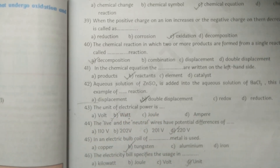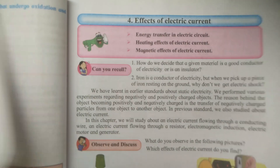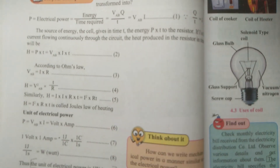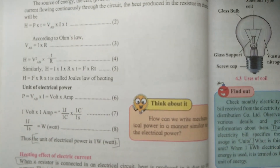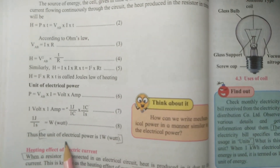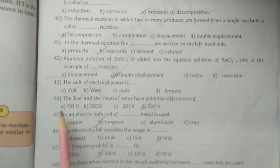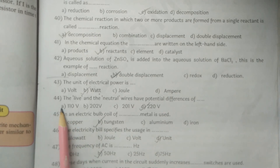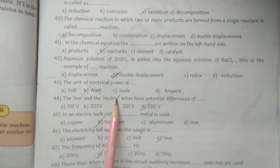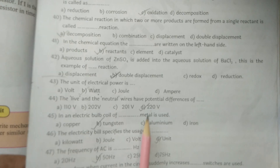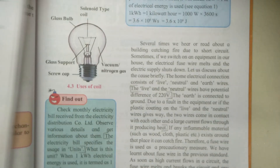The answer can be verified from the textbook on page number 48, where it is given that the unit of electrical power is 1 Watt. Q44: Fill up - the live and the neutral wires have a potential difference of dash. The answer is 220 Volt, as given on page number 49.